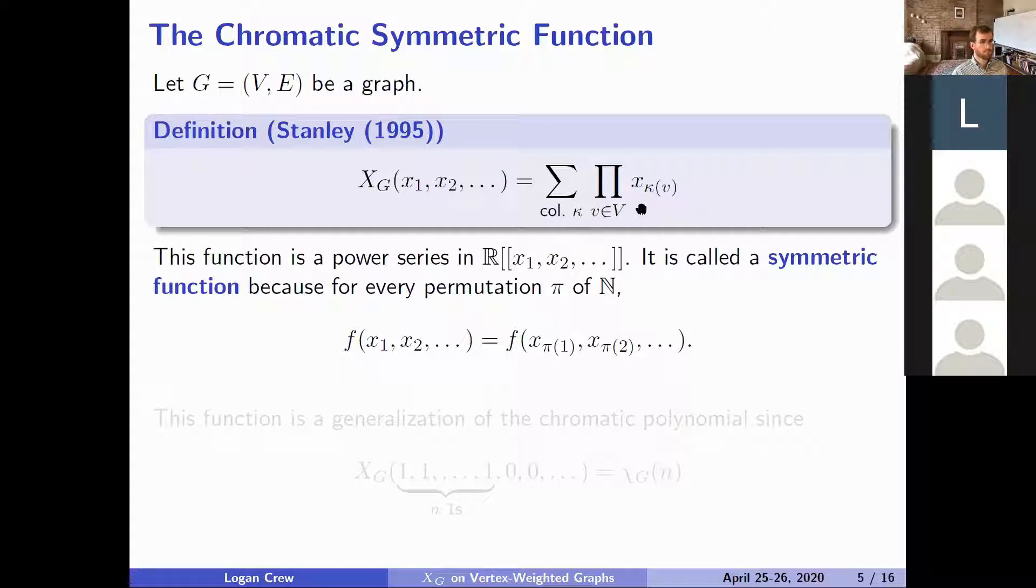The exponent of X sub i is going to be the number of vertices that get the color i in the graph. So it's going to be X1 to the number of ones, X2 to the number of twos. It's slightly more general than the chromatic polynomial since we now learn the breakdown of how the colors are distributed instead of just the fact that it is a coloring. It's a power series. It is a symmetric function because you can permute the indices and it's going to remain unchanged because the permutation of any proper coloring is still a proper coloring.